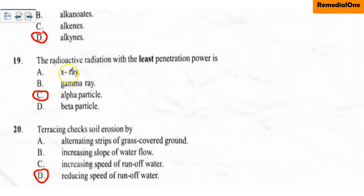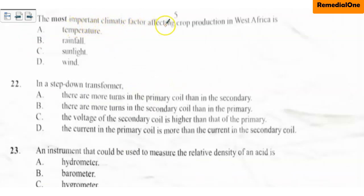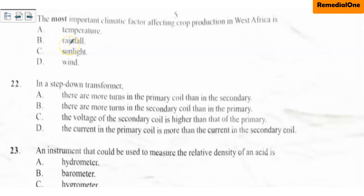Question twenty-one: the most important climatic factor affecting crop production in West Africa is A. temperature, B. rainfall, C. sunlight, D. wind. In West Africa, temperature is not a problem because there is always sunshine. Sunlight and wind are always available. But the only factor which is not always available is rainfall, because there is a season for it. So rainfall is the most important climatic factor — it is the limiting factor for crop production in West Africa.